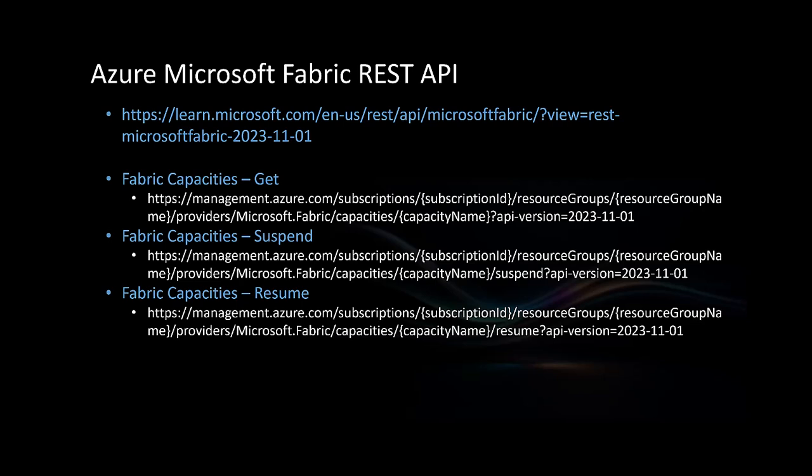The GET API is used for getting the state of the capacity. Before you pause the capacity, you need to check whether it is up and running or not. Or if you're going to resume the capacity, you need to check whether it is already stopped or not. The GET API requires three parameters: subscription ID, resource group name, and capacity name. The second API is SUSPEND — that's for pausing. If you want to pause the capacity, this is the API you call, again passing subscription ID, resource group name, and capacity name. Similarly, you call the RESUME API for starting the capacity, using the same three parameters.